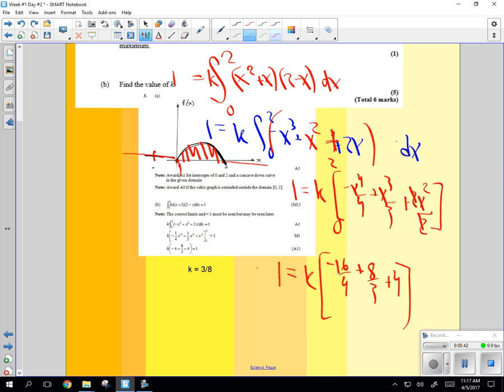Now this is negative 16 fourths and this is 4. These 4s are going to cancel, aren't they? Okay? So this is 1 is equal to k times 8 thirds. So what's k? 3 eighths.